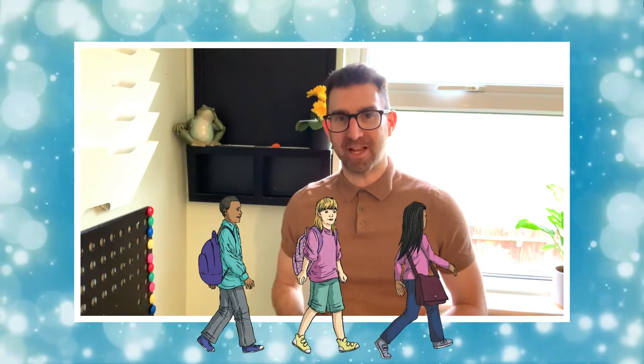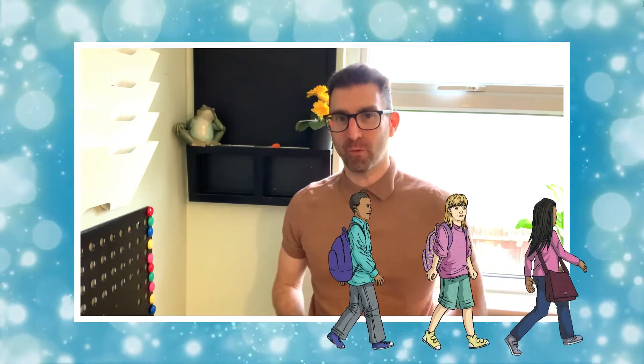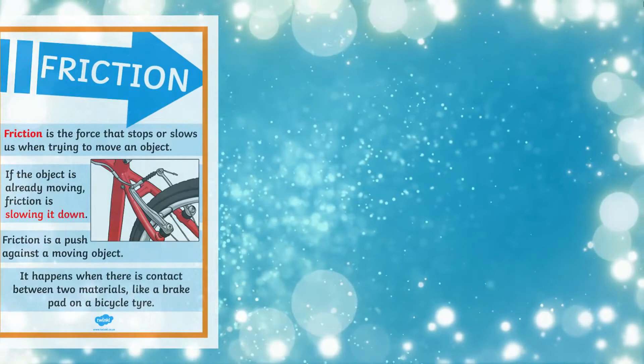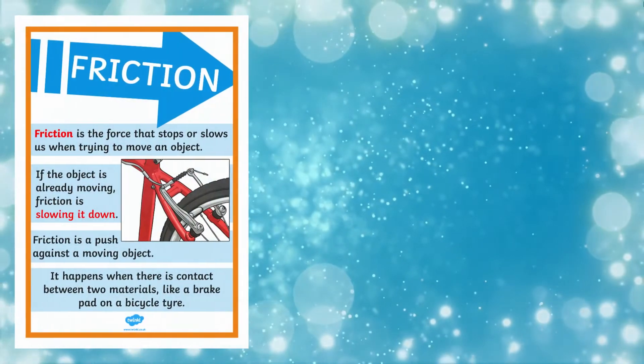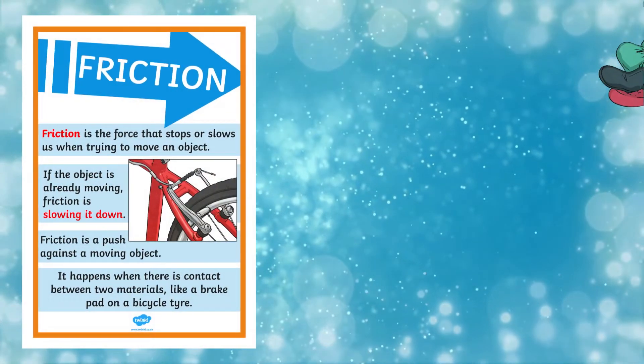Friction can be a useful force because it prevents our shoes slipping on the pavement when we walk and stops car tyres skidding on the road. This friction acts to grip the ground and prevents sliding.